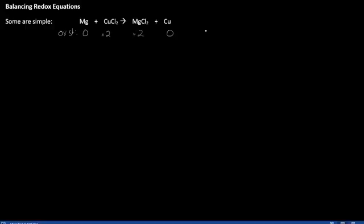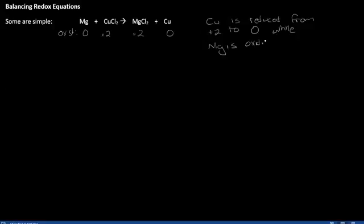Magnesium reacts with copper chloride to make magnesium chloride and solid copper. We can look at the oxidation states for the metals involved. Magnesium starts as zero and becomes positive two. Copper starts as positive two and becomes zero. So copper is reduced from plus two to zero, while magnesium is oxidized from zero to positive two. We can balance this equation with no problem — the coefficients are all just going to be one. I don't need any special techniques to handle the balancing of this reaction.